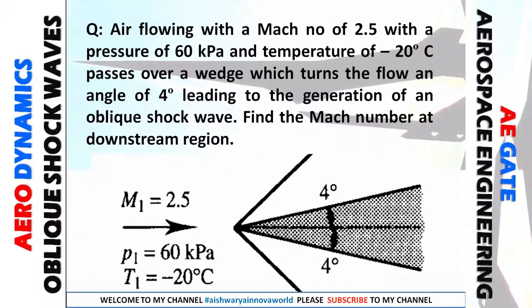Let me read the question: Air flowing with a Mach number of 2.5, pressure of 60 kilopascal, and temperature of minus 20 degrees centigrade passes over an edge which turns the flow at an angle of 4 degrees, leading to the generation of an oblique shockwave. Find the Mach number at the downstream. They have given Mach number M1, P1, T1, and the angle.